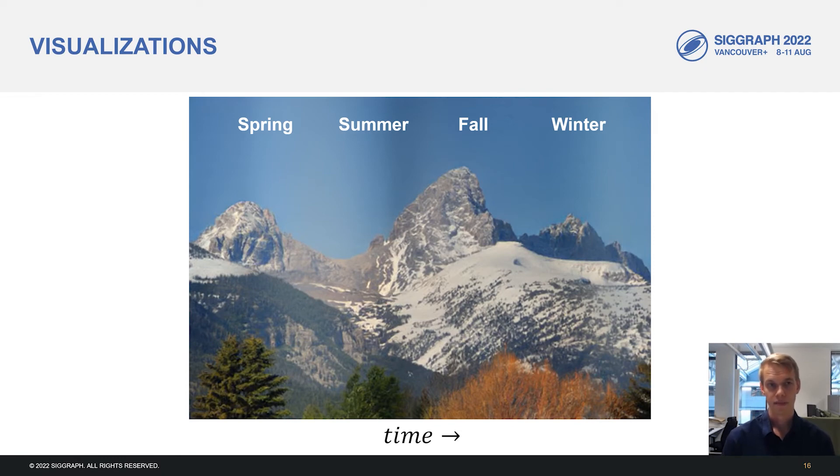Due to our more stable and controllable models, we can perform interesting visualizations that wouldn't be possible with the input sequence alone. Here, for example, we have an image where every column gets a different conditioning value for the year cycle.